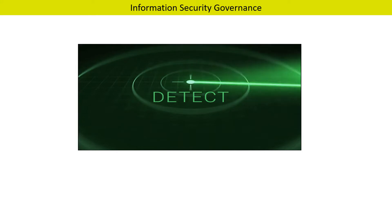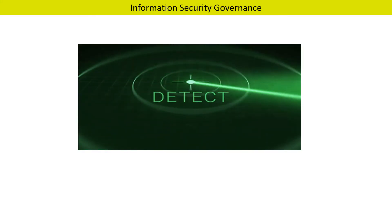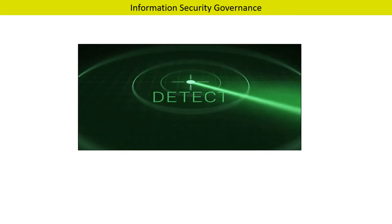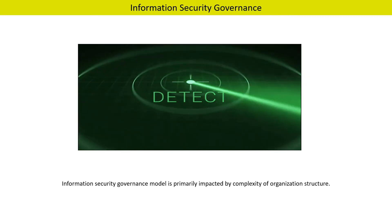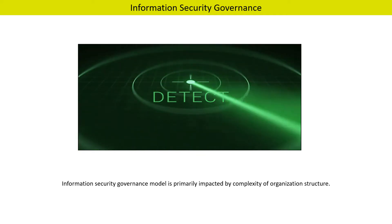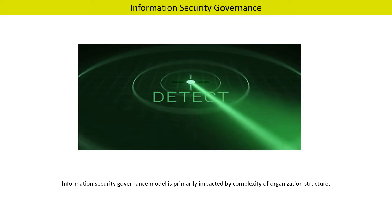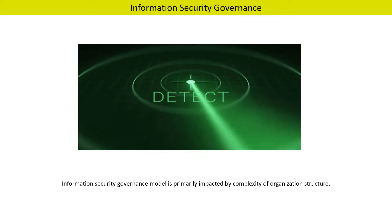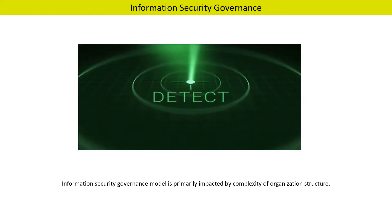Now let us discuss about information security governance. Information security governance is the subset of overall governance. The information security governance model is primarily impacted by the complexity of the organization structure. Organization structure includes objectives, vision and mission, different functional units, different product lines, hierarchy structure, leadership structure and other relevant details.